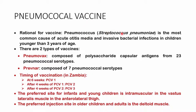With the pneumococcal vaccine, this protects against Streptococcus pneumoniae, the most common cause of acute otitis media and invasive bacterial infection in children under three. There are two types: Pneumovax, containing polysaccharide capsular antigens from 23 pneumococcal serotypes offering wider protection, and Prevnar, composed of seven pneumococcal serotypes. The schedule starts at six weeks with PCV1, then PCV2 at 10 weeks, and PCV3 at 14 weeks. The preferred injection site in infants is intramuscular in the vastus lateralis; in older children and adults it is the deltoid muscle.